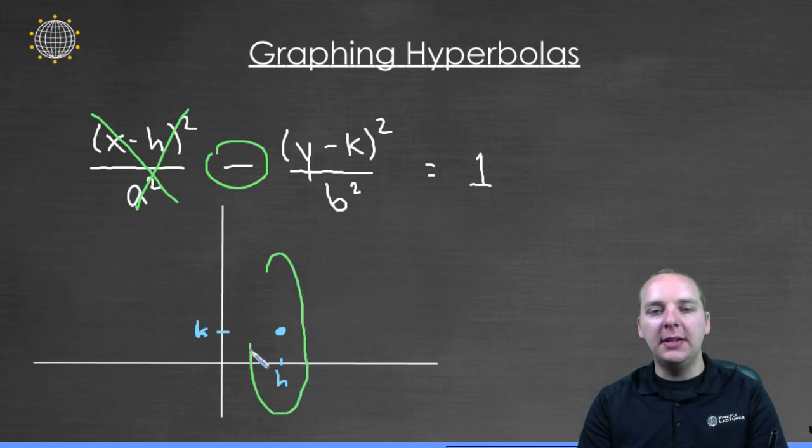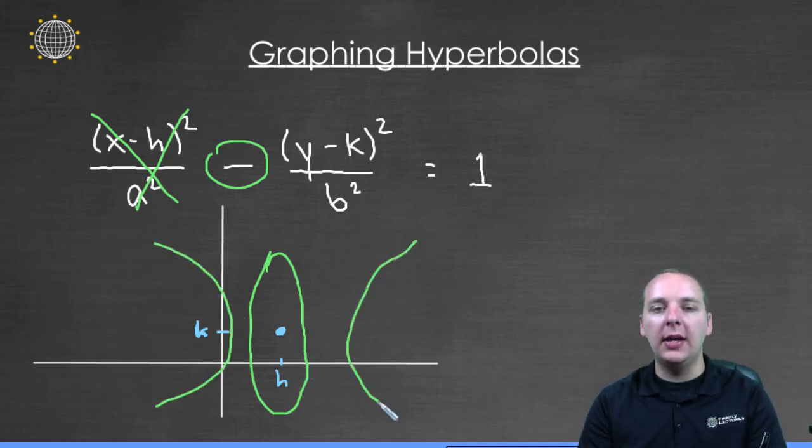So if there's this empty space here, if there's no y value when x is h, then the only option you have is to have a hyperbola that opens to the left and to the right. You can't have it opening up or down because then you would have y values when x is h.